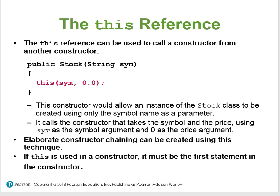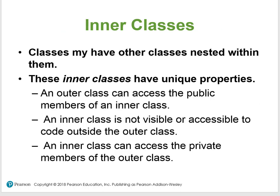The 'this' reference can also be used to call one constructor from another constructor — very similar to what we saw with static references. This constructor chaining allows an instance to be created using just a symbol name as the parameter, then calling another constructor with the symbol and price. If 'this' is used in a constructor, it must be the first statement.